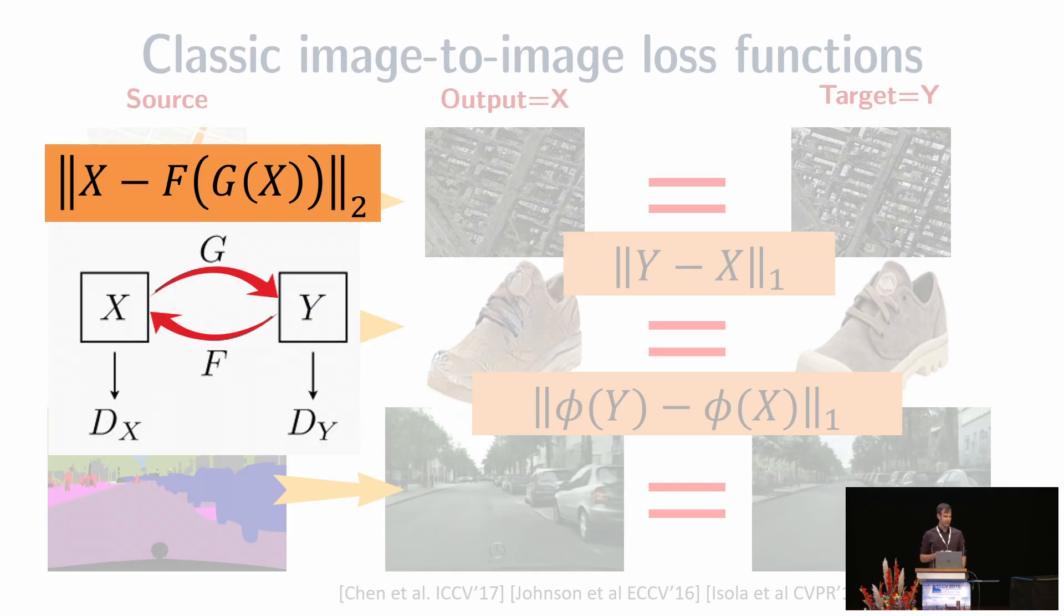Even methods that do not assume paired data, such as CycleGAN, use the cycle in order to compare the cycled image with the input image using an L1 norm.